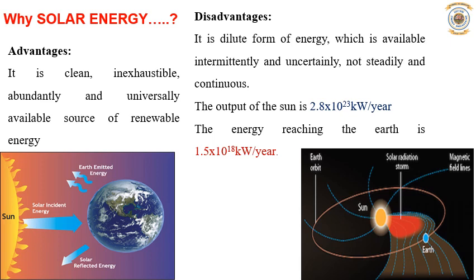The total output of the sun is about 2.8 × 10²³ kW per year, but the available energy at the earth is only about 1.5 × 10¹⁸ kW per year. However, if we focus on trapping or extracting this energy for our usage, it will be very much beneficial for humankind.